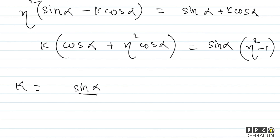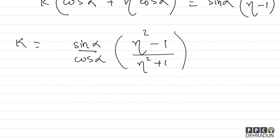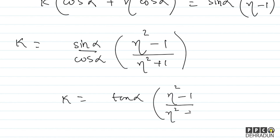Therefore k = sin alpha / cos alpha × (eta² minus 1)/(eta² plus 1), which gives us: k = tan(alpha) × (eta² − 1)/(eta² + 1).